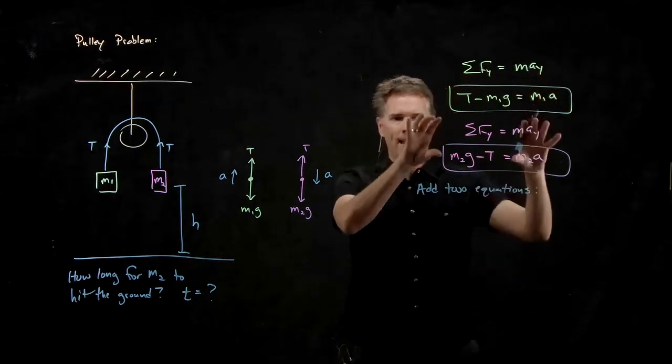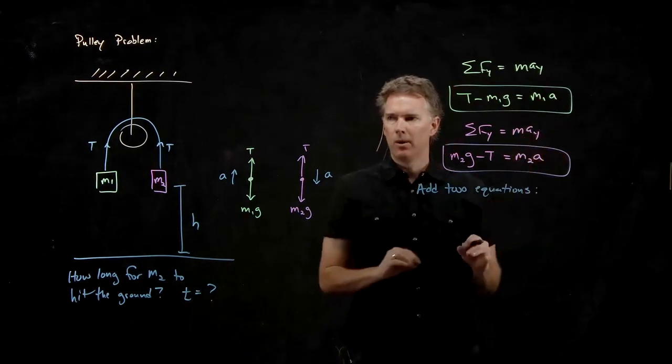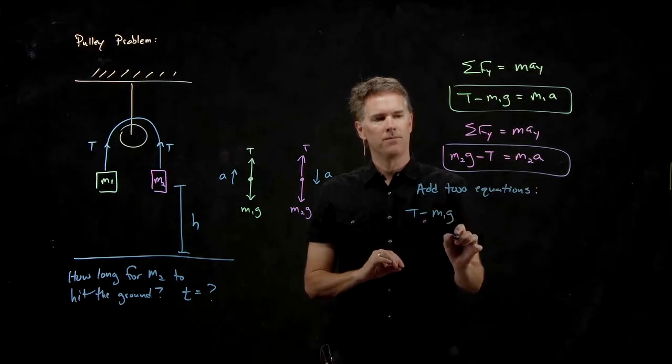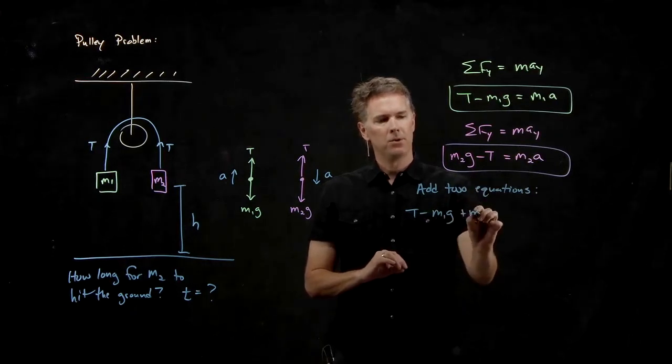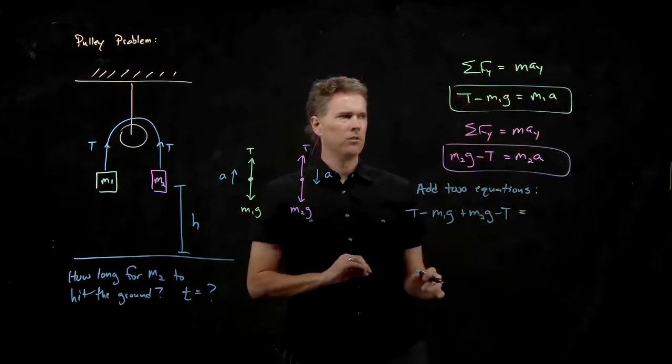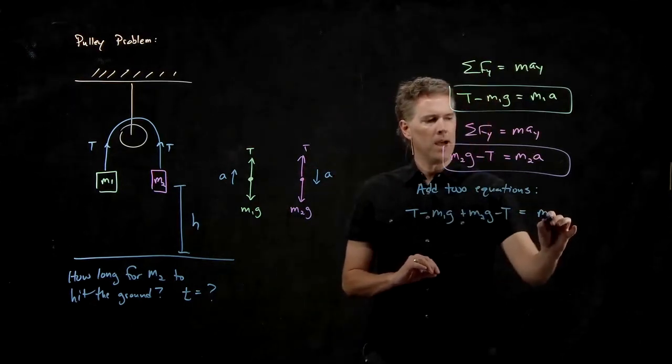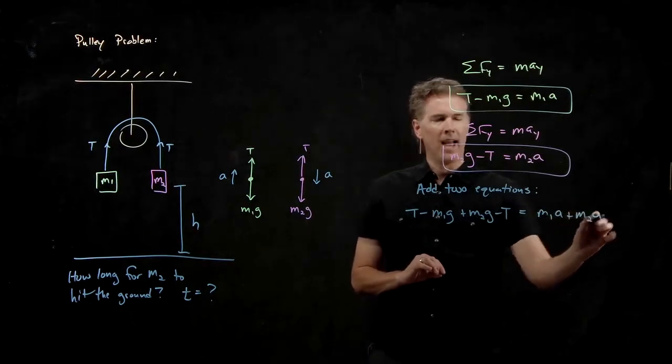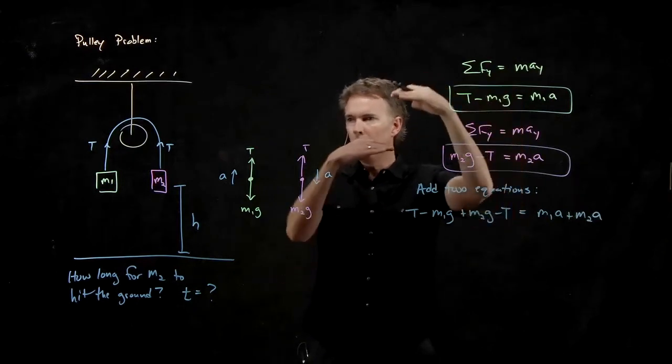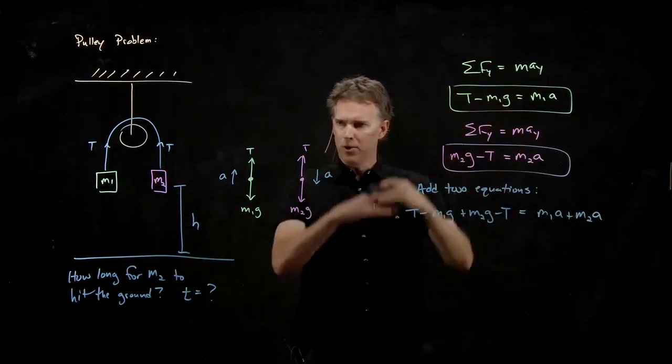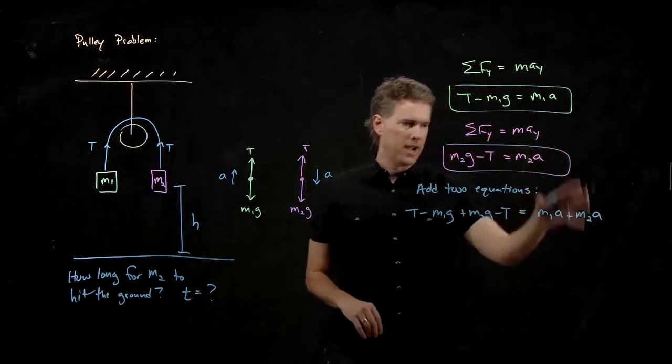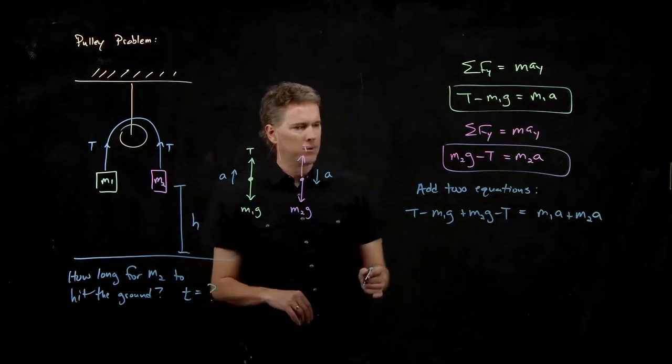Take this block and add it to this block. And look what happens if I do that. I get T minus M1g plus M2g minus T. That's the left side of those equations is going to equal M1a plus M2a. Anytime you have equations on top of each other, you can always just add them together or you can always just subtract them together if you just keep both sides separate. Add the left sides, add the right sides. And now you see what happens.